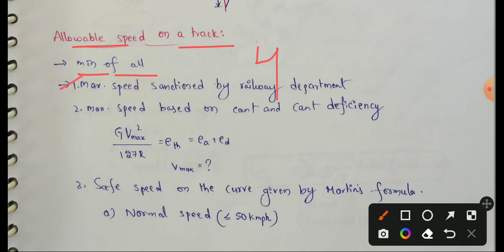First one: maximum speed is sanctioned by the railway department. So the railway department sanctions the maximum speed.